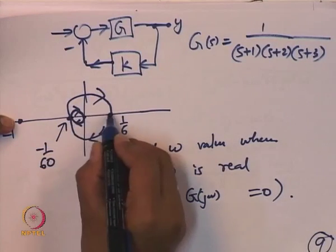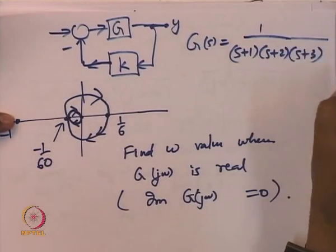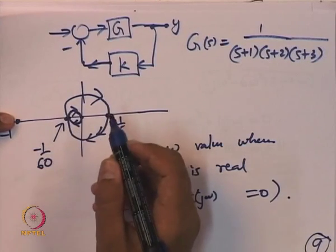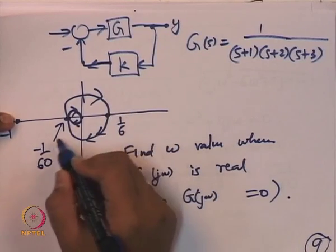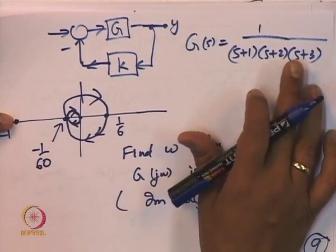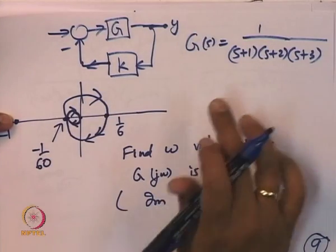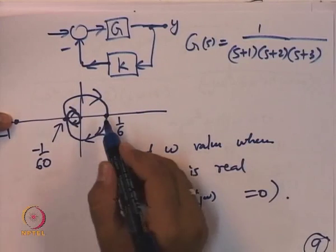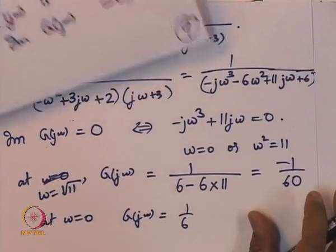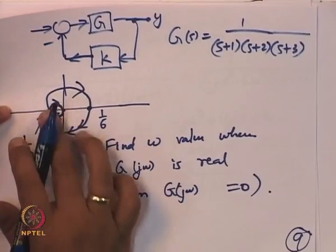This point −1/60 is closer to the origin than 1/6, as expected since the Bode magnitude plot is only decreasing due to all poles — it is like a low-pass filter. With only real poles and no pole at the origin, the magnitude keeps decreasing. So the Nyquist plot from 1/6 continuously comes closer to the origin, intersecting the negative real axis at −1/60.